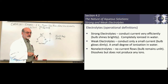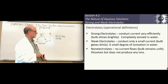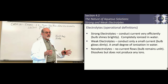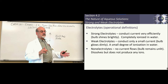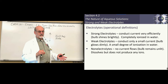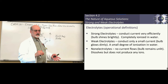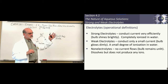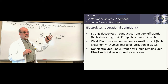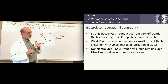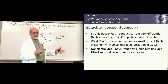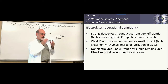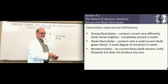Weak electrolytes will conduct electricity, but they don't produce as many ions for conducting the current, so the current is decreased and that light bulb is dimmer. Non-electrolytes are those that do not conduct electricity at all. Table sugar is one — you can put a lot of sugar into solution, but it doesn't ionize; it's the whole molecule that goes into solution.